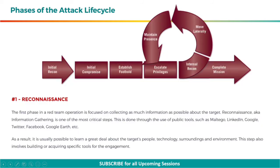Let's understand the various phases of the red team lifecycle. The first step is reconnaissance. The first phase in a red team operation is focused on collecting as much information as possible about the target. Reconnaissance, also known as information gathering, is one of the most critical steps. This is done through the use of public tools such as Maltego, LinkedIn, Google, Twitter, Facebook, Google Earth, etc. As a result, it is usually possible to learn a great deal about the target's people, technology, surroundings, and environment.